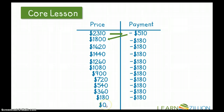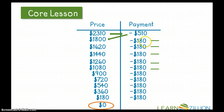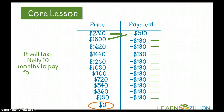Now that I'm at zero, the question was how many payments of $180 does Nellie have to make until she pays off her TV? So: one, two, three, four, five, six, seven, eight, nine, ten. She made ten payments of $180, and these payments were monthly. So it's going to take Nellie ten months to pay for the TV.